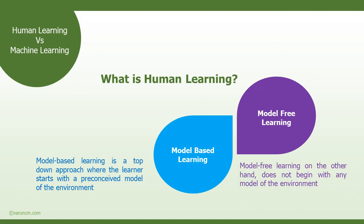In the case of model-free learning, it is different — it does not begin with any model of the environment. The rewards of each action are learned and stored in a bottom-up way, by which future actions are decided based on what was learned. While both model-free and model-based mechanisms can be found in human learning, the mechanism generally observed is the model-based learning.